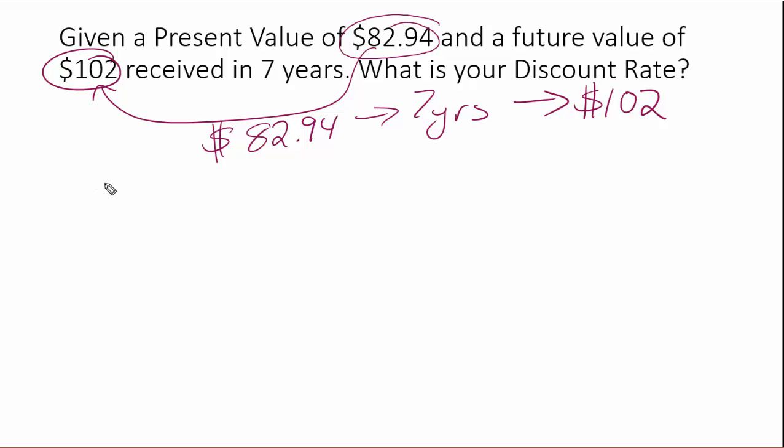Now, the way we solve this is that we're going to have our basic time value of money formula: present value is equal to future value divided by one plus R raised to the T power. So we have all this stuff here ready to go, except for the R.